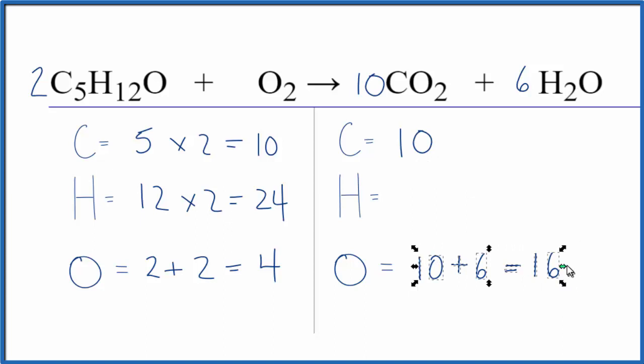So we need to have two times something gives us 24, so we need 12 for our hydrogens. Let's do that, so we put a 12 here. 12 times 2, that's 24, so those are balanced. Now let's add up our oxygens again.